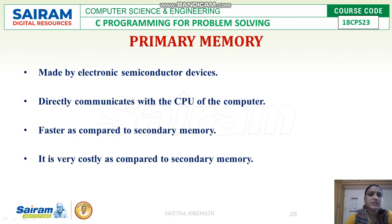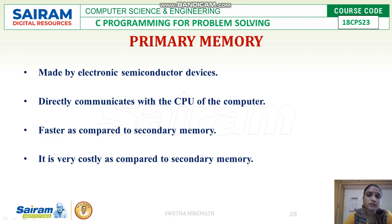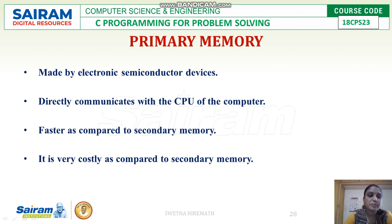Primary memory is made by electronic semiconductor devices. The smallest unit of storage — the bit — is stored in semiconductor cells. Primary memory directly communicates with the CPU and is faster when compared with secondary storage devices.